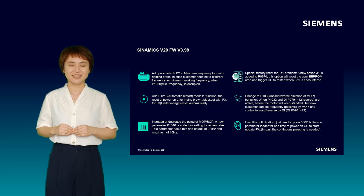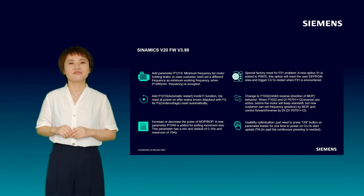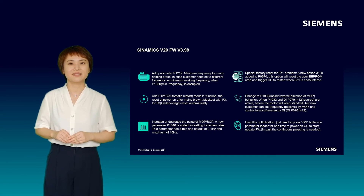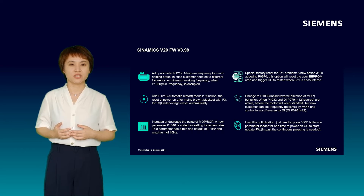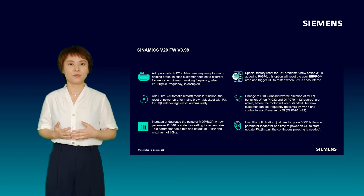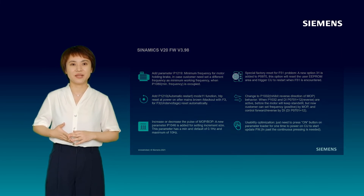First, the increment size of MOP can be adjusted from the default 3.1 Hz to a maximum of 10 Hz, so a faster manual adjustment can be achieved. And secondly, a new option can restart the EPROM when a fault occurs, reducing the effort of returning back to factory settings.